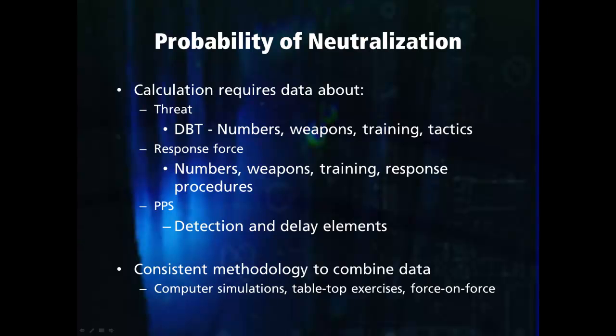The other data required to calculate the probability of neutralization are known and include the numbers of response force, their weapons, training levels, and response procedures. Information about the physical protection system must also be included in the neutralization analysis, such as the types and locations of detection and delay elements. The calculation of the neutralization probability requires combining all of this data in a consistent methodology.